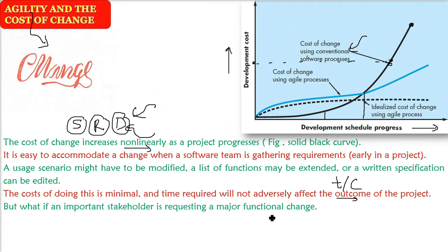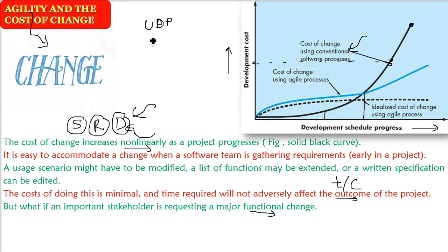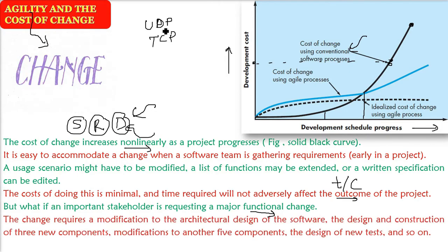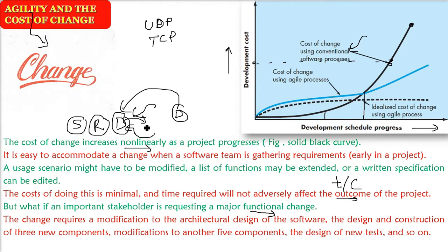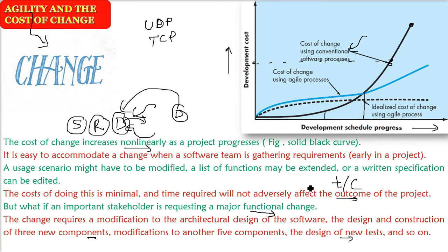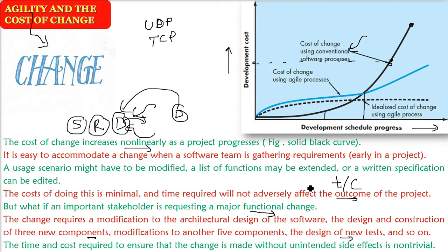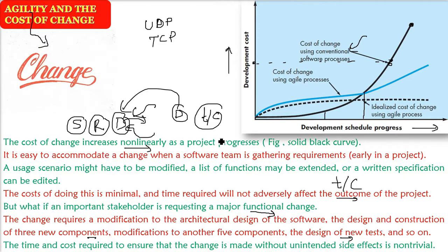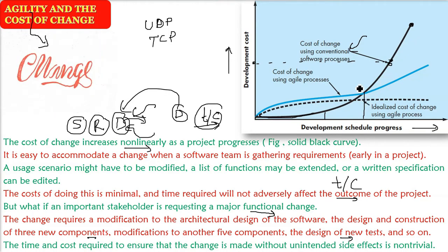What if an important stakeholder comes at the later stages — after design is done, say you are doing UDP — and requests you to switch to TCP, transmission control protocol? The architectural design has already been made, construction has already been done, the component has been done. So you have to change the component design, modify the architectural design, and even design new tests. The time and cost will be adversely affected — it will impact your project's cost and schedule — if changes are prescribed to you at later stages in a conventional software development lifecycle.